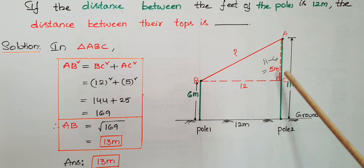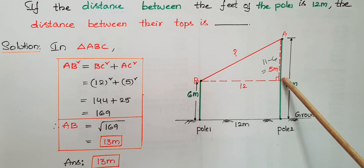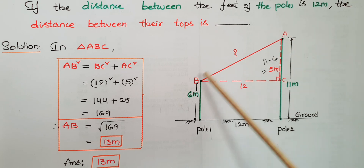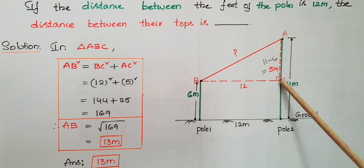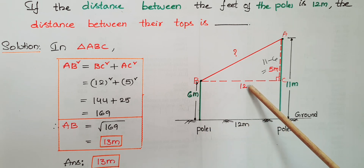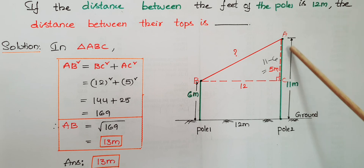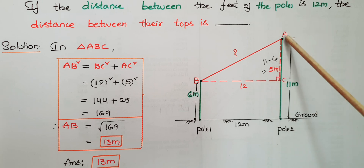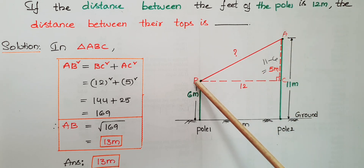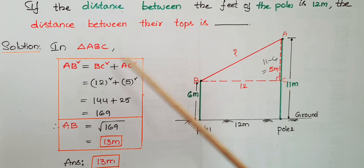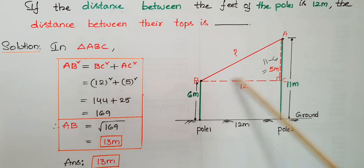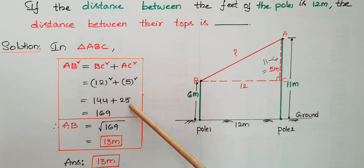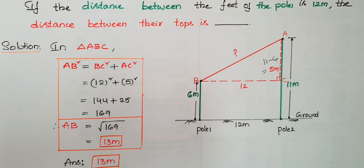Drawing a perpendicular line from the top of the first pole B to the second pole gives BC = 12 meters, the same as the distance between the two poles. AC equals 11 − 6 = 5 meters. Using Pythagoras theorem on right triangle ABC: AB² = BC² + AC² = 12² + 5² = 144 + 25 = 169. Therefore AB = √169 = 13 meters. The answer is 13 meters.